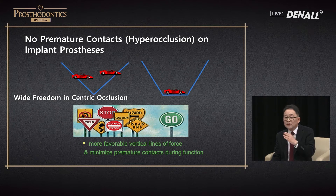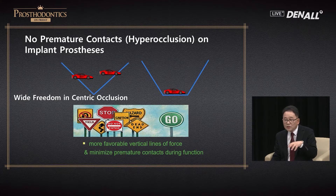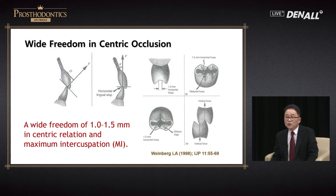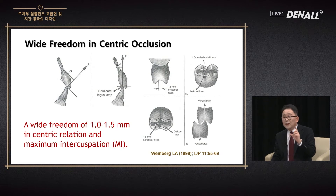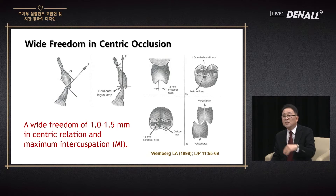Cars collide with each other on the V-form. Freedom of centric — if it is 1.5 mm, that space is important. Weinberg also talked about this, which is already known to many. To give freedom to the centric, many people are making efforts. For implant prostheses, there are no mechanoreceptors, so guidance from CR to MIP is lacking. Therefore, widening centric is required.